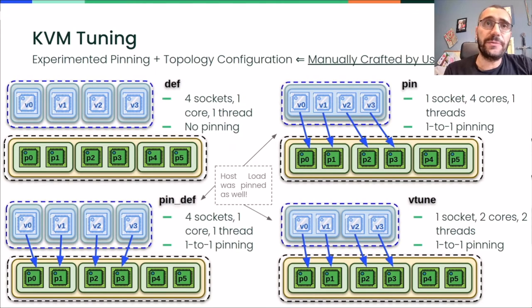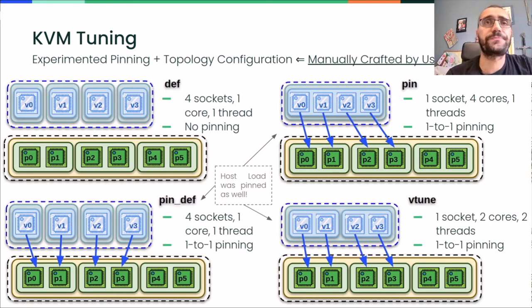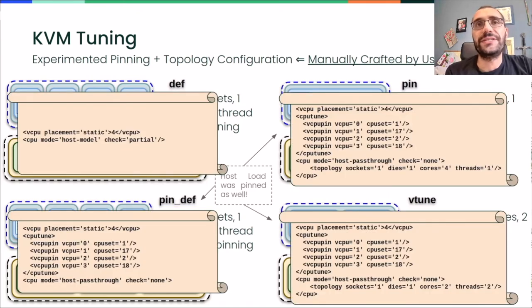For KVM in our experiments, we considered four different configurations. The default one: no pinning at all for vCPUs and no virtual topology defined. Then a pinning-default and a pinning-custom configuration, where we do one-to-one vCPU pinning for both and either leave the virtual topology as default or define a custom one with all vCPUs defined as cores of the same socket. Finally, we checked the fully-tuned setup, where we do one-to-one vCPU pinning coupled with the perfect guest-to-host virtual topology mapping. This is how we specify each of these configurations in the libvirt VM XML file.